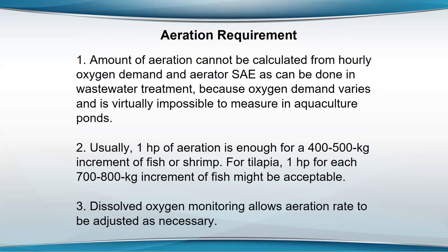Usually one horsepower of aeration is enough for about 400 to 500 kilograms increments of fish or shrimp biomass. For tilapia, maybe 700 to 800 kilograms per horsepower. I've never really seen that worked out definitively for tilapia.